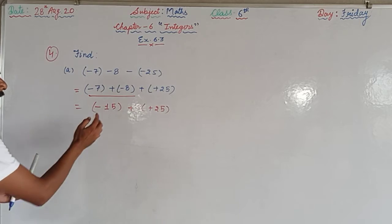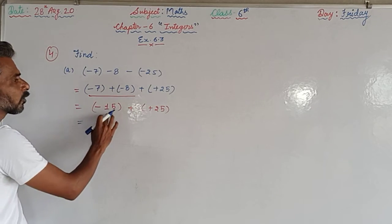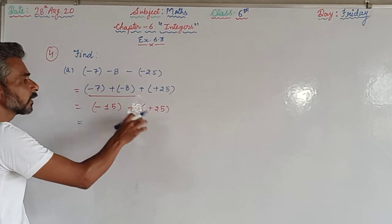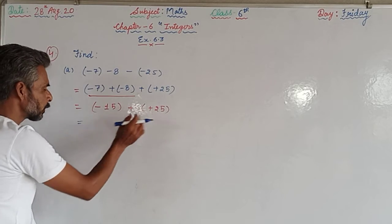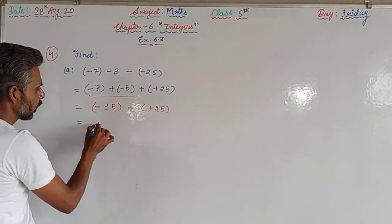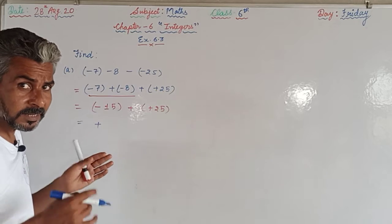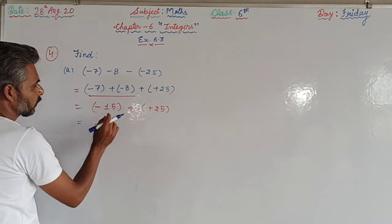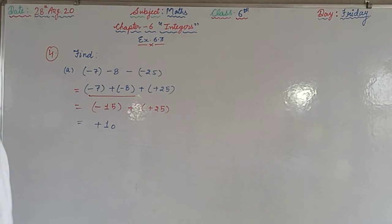Now the signs are different. In this case, the sign of the larger number in magnitude will be in the answer. Since 25 is larger than 15, and the sign of 25 is plus, the answer will be positive. When integers have different signs, we subtract: 25 minus 15 equals 10. So the answer to part A is plus 10.